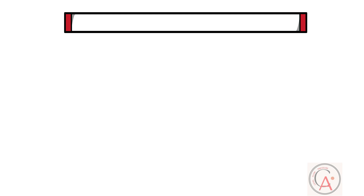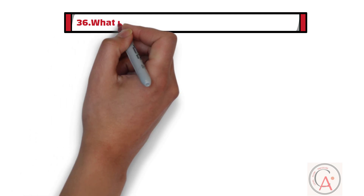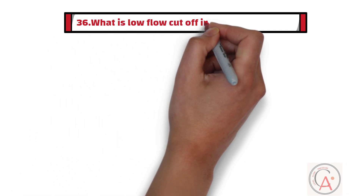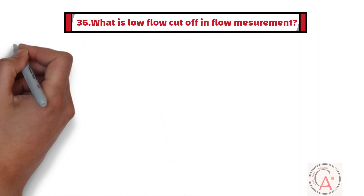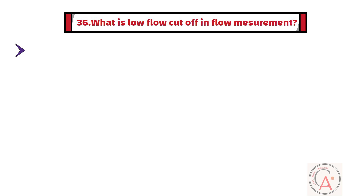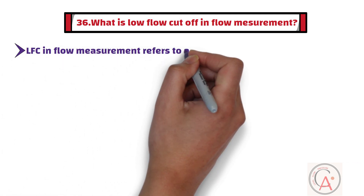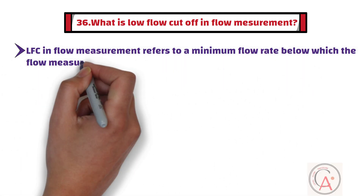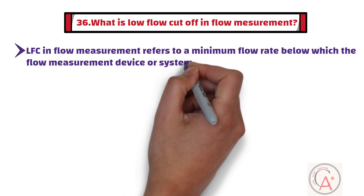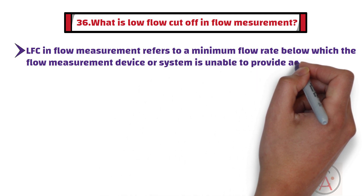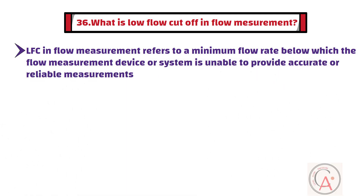Question 36: What is low flow cutoff in flow measurement? Low flow cutoff in flow measurement refers to a minimum flow rate below which the flow measurement device or system is unable to provide accurate or reliable measurements. In many flow measurement devices, there is a practical limit to how low a flow rate they can accurately measure.